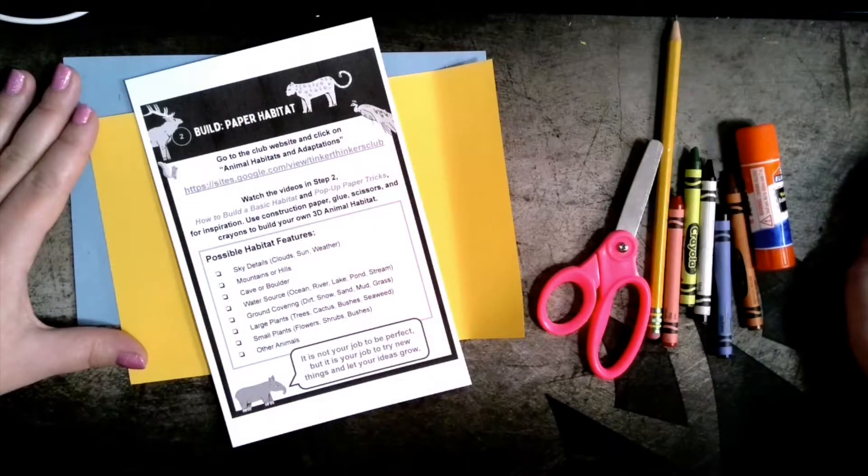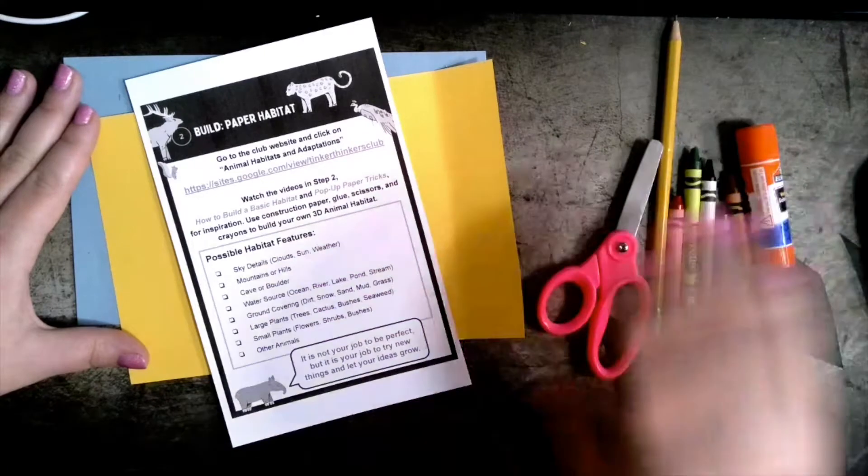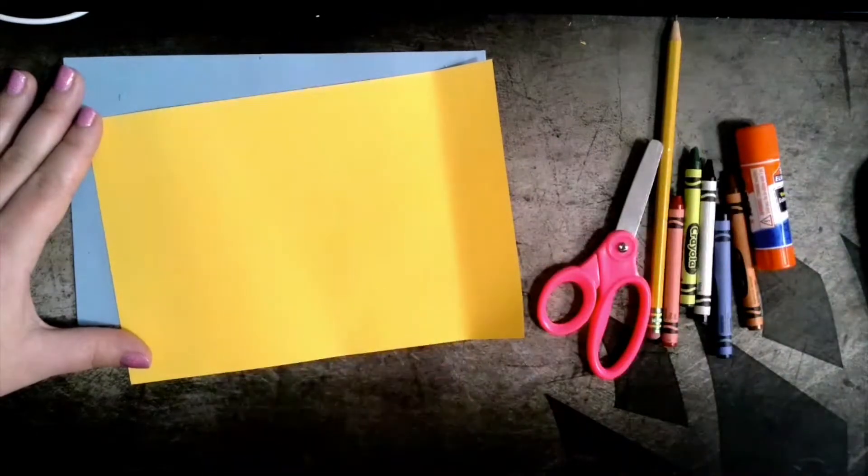The task card for step two provides a helpful checklist on possible habitat features that you might include.